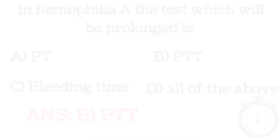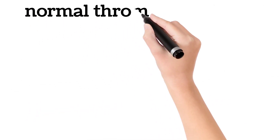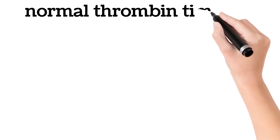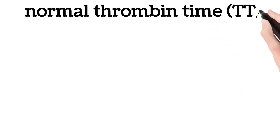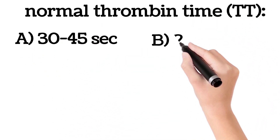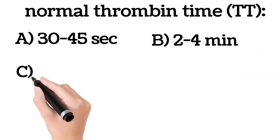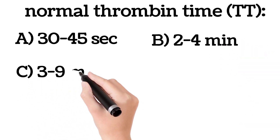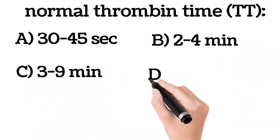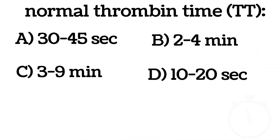Normal thrombin time: A. 30 to 45 seconds, B. 2-4 minutes, C. 3-9 minutes, D. 10 to 20 seconds.